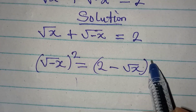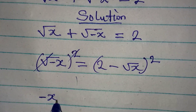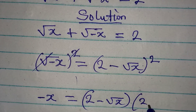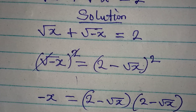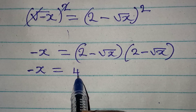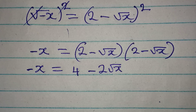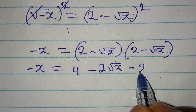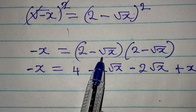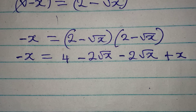Squaring both sides, the left side simplifies so that negative x equals 2 minus square root of x, times 2 minus square root of x. Expanding: 2 times 2 is 4, then 2 times negative root x gives minus 2 root x, then negative root x times 2 gives another minus 2 root x, then plus x, because negative root x squared gives positive x.